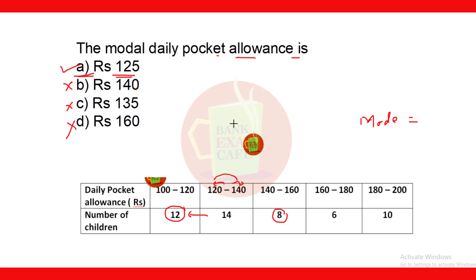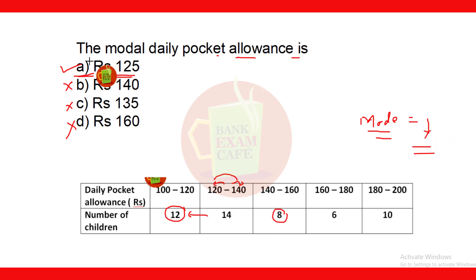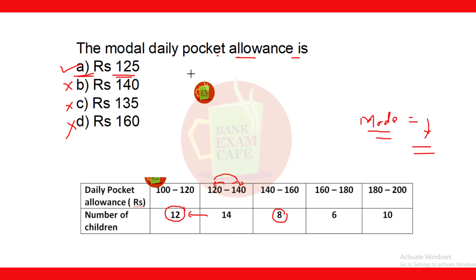Remember, guessing is sometimes accidental — you must have the knowledge to guess correctly. You can also find the mode using the formula if your calculations are quick. This way you can find the mode by reasoning through the options.